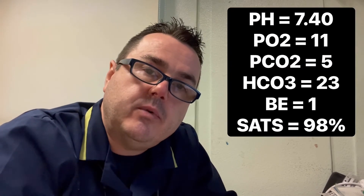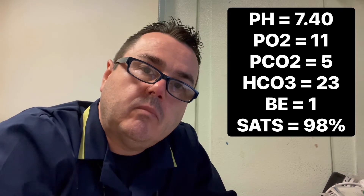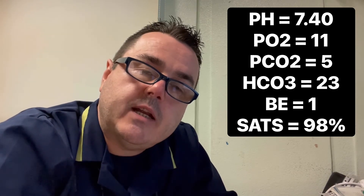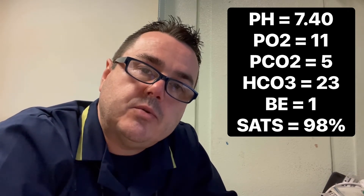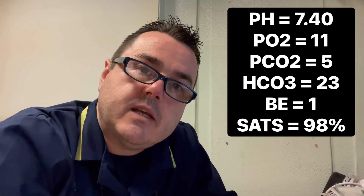I'm going to put up a normal blood gas with normal values for somebody with normal day-to-day living and no disease process. As you can see, the pH is normal, the PO2 is normal between 10 and 12, the CO2 is between 4 and 6, the bicarb is 22 to 26, base excess is between plus 2 and minus 2, and the saturations are 98.